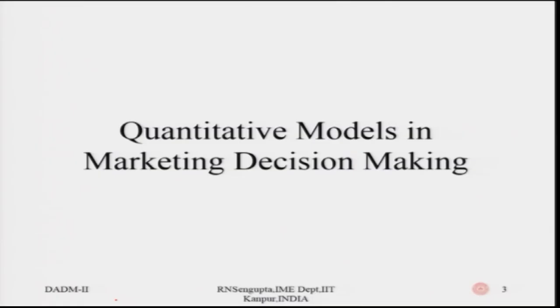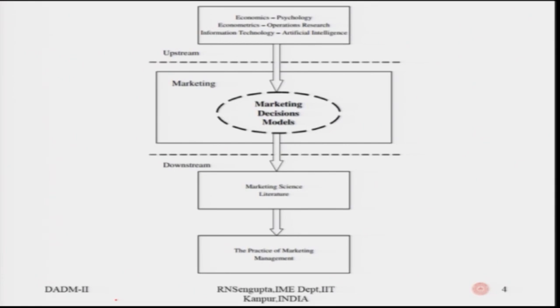So far, Professor Sengupta has discussed a lot of decision-making techniques, for example, AHP, Utility Theory, and other multi-criteria decision-making models. What I am going to cover in the current lecture and the one after this is how these decision-making techniques are utilized in marketing models. Marketing is an applied field where a lot of decision-making is involved in terms of understanding customer demand, in sales forecasting, in planning pricing strategies, and so on. Marketing utilizes the concepts of econometrics, economics, and other statistical techniques in marketing decision models, which are applied downstream in making those strategies which a firm adopts.